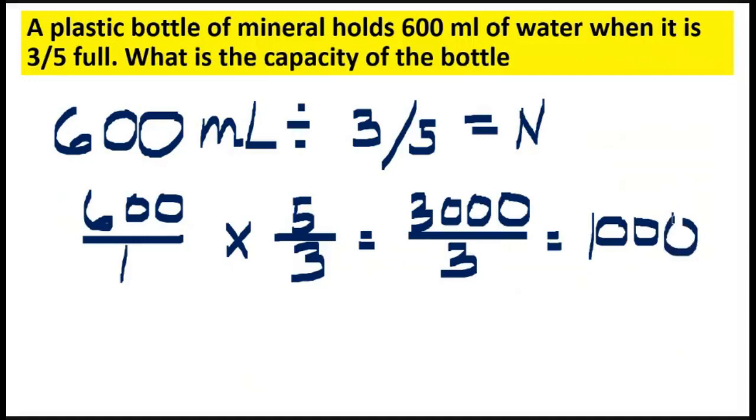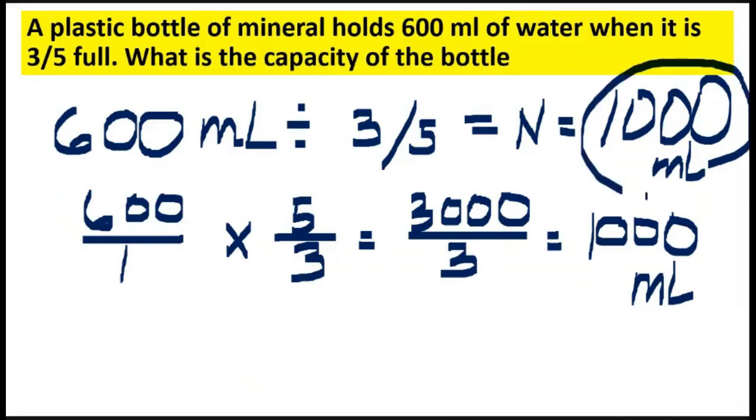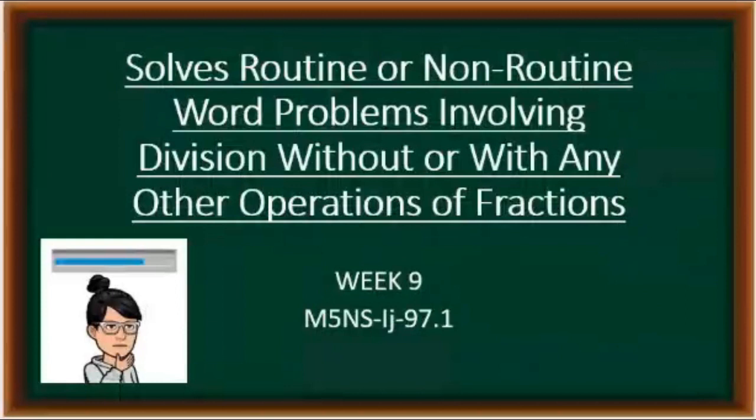Therefore, the answer is 1,000. So, the capacity of the bottle is 1,000 ml or katumbas niyan ay isang litro. That's the end of solving routine and non-routine word problems involving division without or with any other operation of fractions.